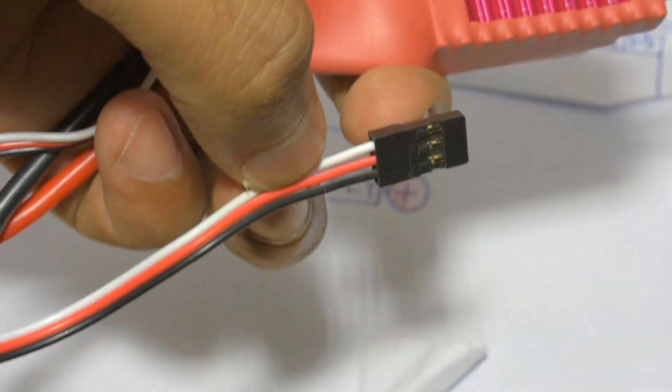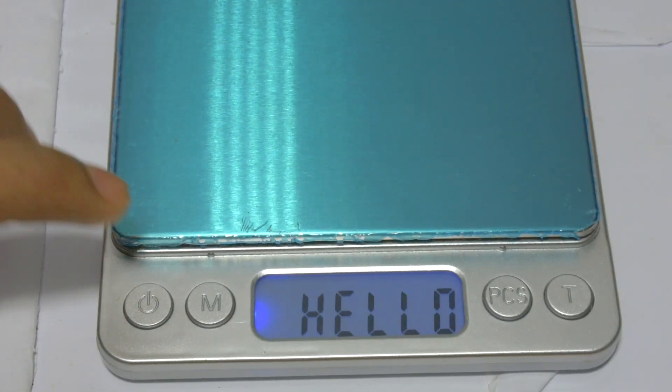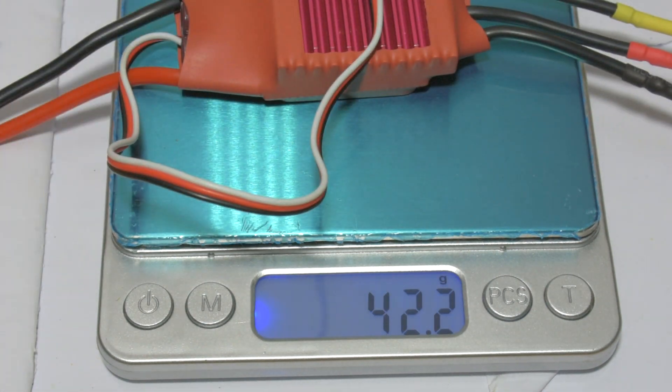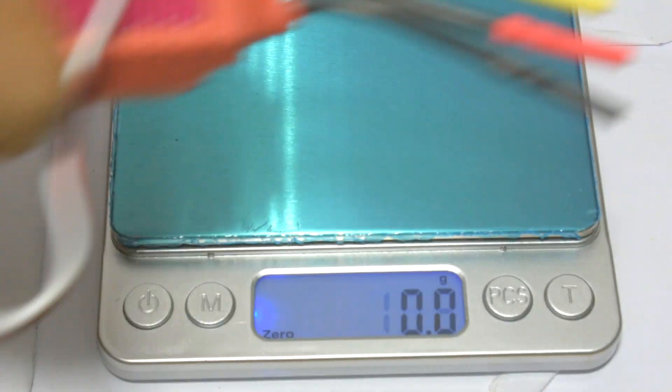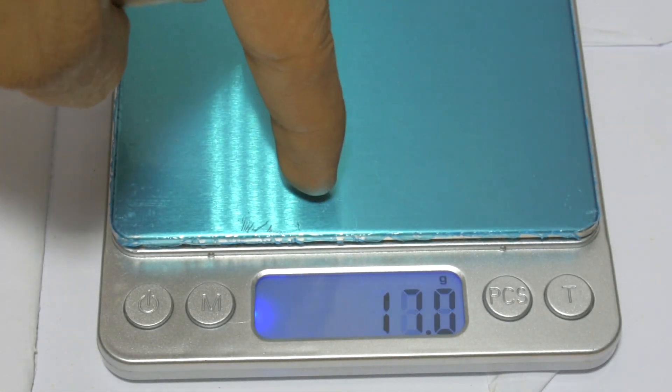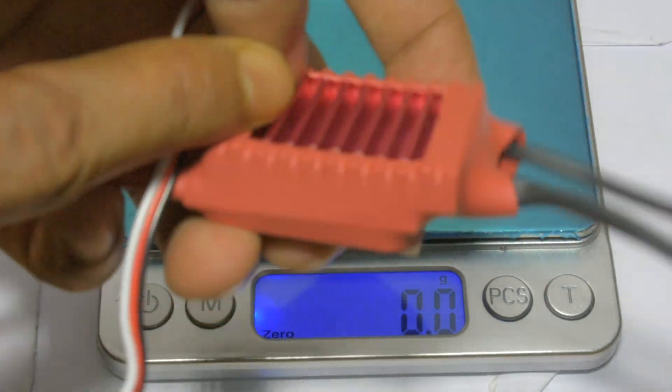Let's measure its weight. For this purpose I'm using this weight machine. Its weight is 42.1 grams, so it's a pretty heavy ESC. If you want to buy this weight machine, the link is in the description box below. If you want to buy this one, the link is also in the description box below.